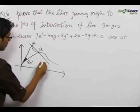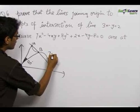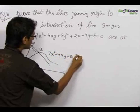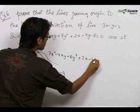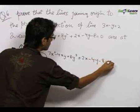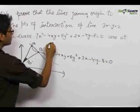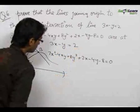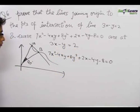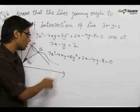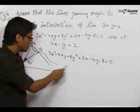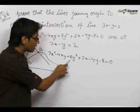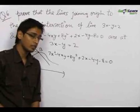For this we homogenize the curve 7x² − 4xy + 8y² + 2x − 4y − 8 = 0 using the line 3x − y = 2. In homogenization, we note that the x² term has degree 2, the xy term also has degree 1+1 = 2, and the y² term also has degree 2.